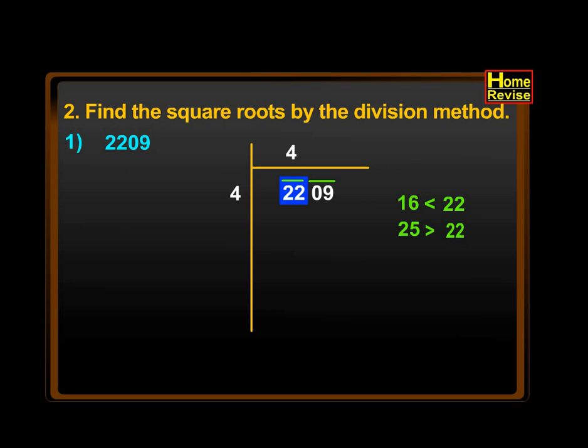Now we shall write 16, the square of 4, below 22 and subtract it from 22. The remainder is 6 to the 4 on the left hand side. We have to add the same number, that is 4. So 4 plus 4 and write the sum, that is 8, below. Now we have to write the next pair, that is 0 and 9, after the remainder, that is 6. Therefore, we get the number 609.